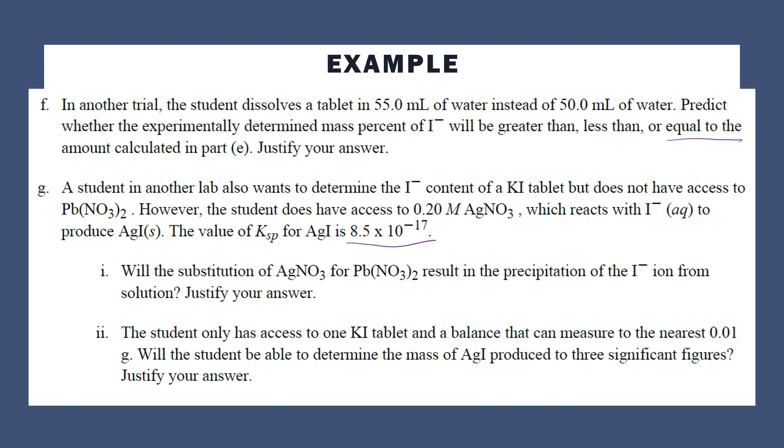Part III: The student only has access to one potassium iodide tablet and the balance can measure to the nearest 0.01 gram. Will the student be able to determine the mass of silver iodide produced to three significant figures? The answer is no, because if you have a balance that only measures to the hundredths place and my original mass of the tablet was 0.425 grams, even on this balance we can only measure to the hundredths place. At best you'll get 0.42 or 0.43 on that balance, which only gives two significant digits. So no, the student will not be able to determine the mass to three significant figures because it is limited by the hundredths place of the balance. You can only get two significant digits. That was just one point.